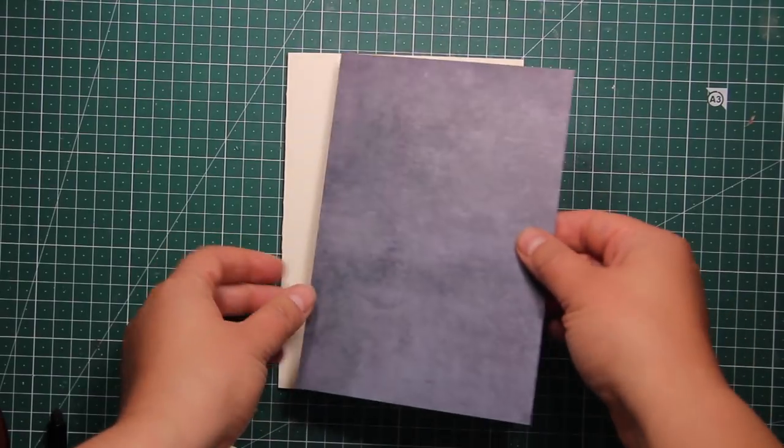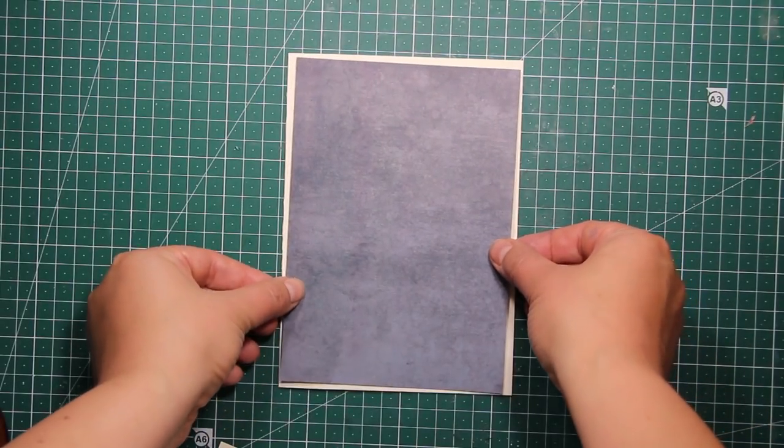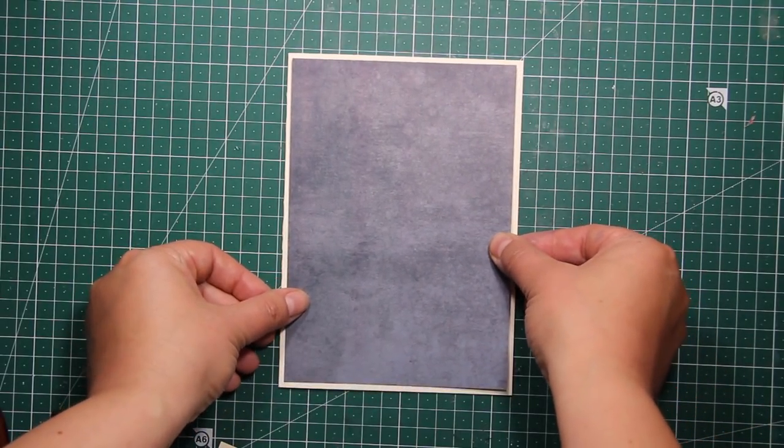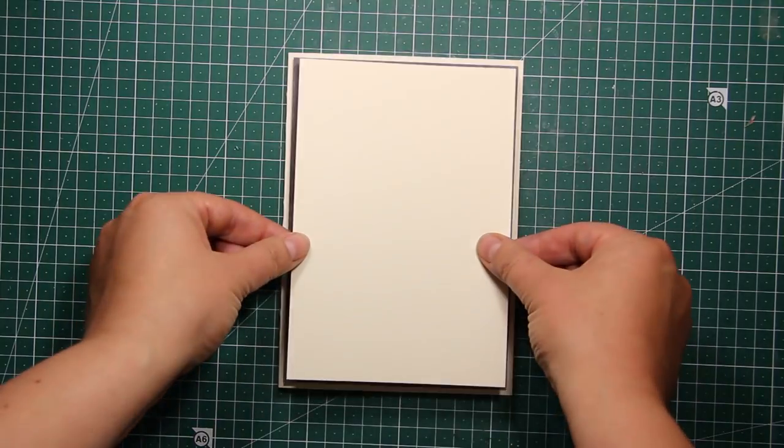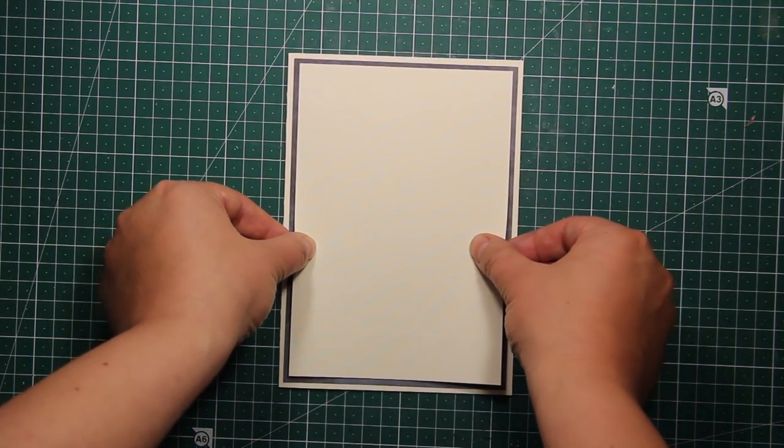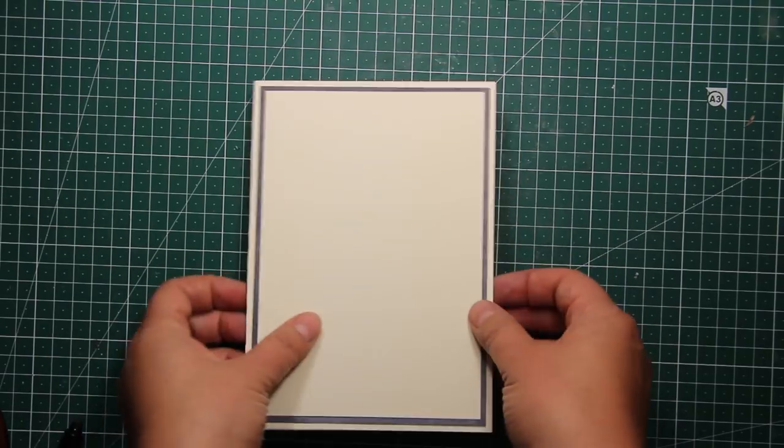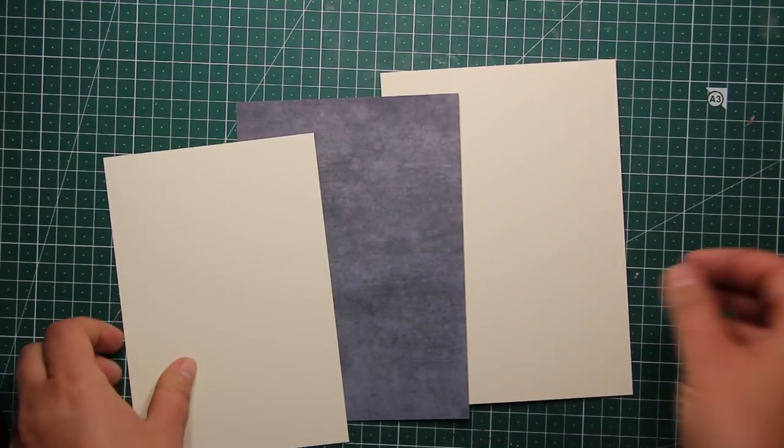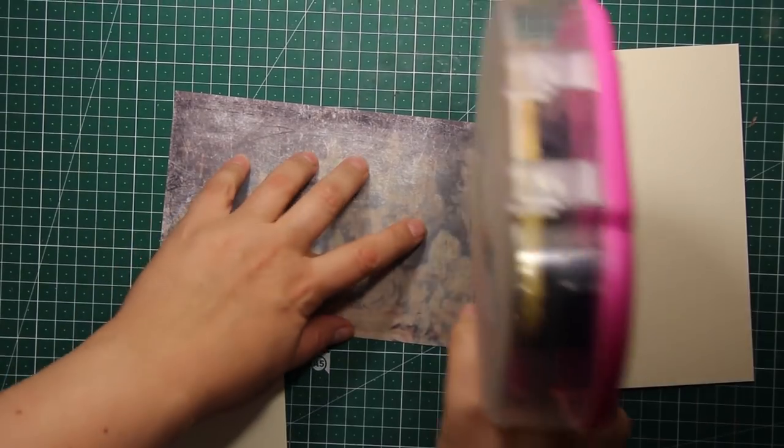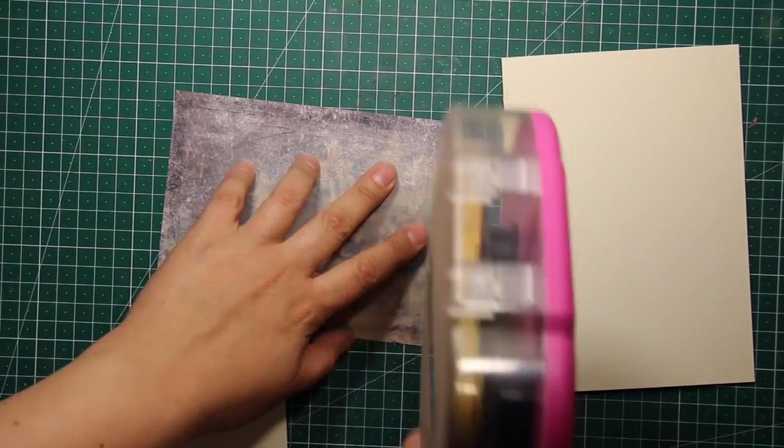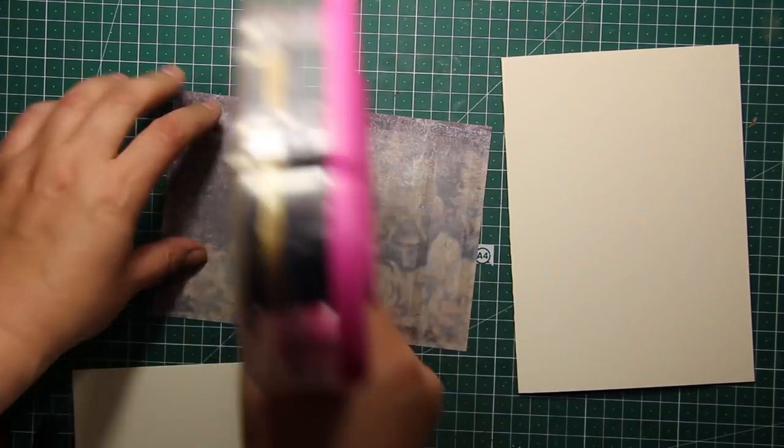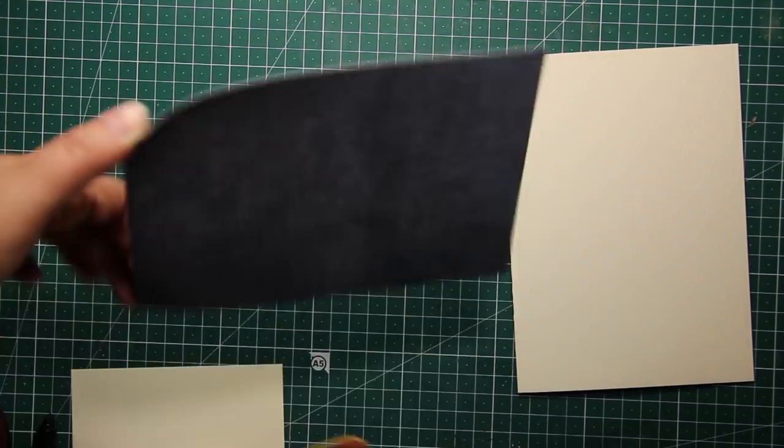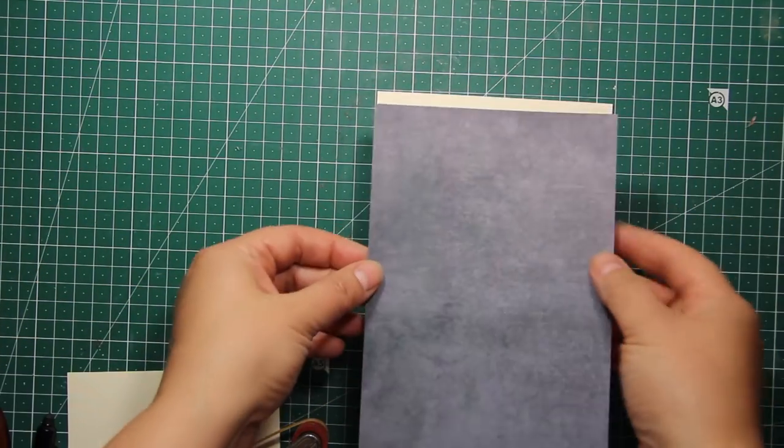I've used my paper trimmer and a scoring board to create a card base out of cream cardstock that is 5 by 7 inches. I've also trimmed that panel out of blue paper that is quarter of an inch smaller and another cream panel that is yet another quarter of an inch smaller than the previous one. This is going to create a 1/8 of an inch border all around the card.